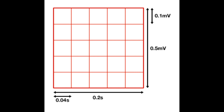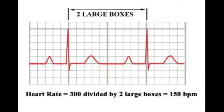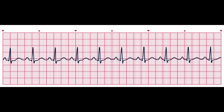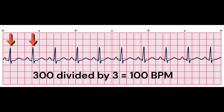One large box or block is made up of 25 small boxes — it is five small boxes tall and five small boxes wide. You count the number of large boxes between two QRS complexes, then divide 300 by that number to obtain the heart rate. In this example, we count three large boxes between two QRS complexes, as indicated by the arrows, so 300 divided by 3 equals 100 beats per minute.